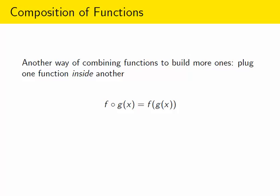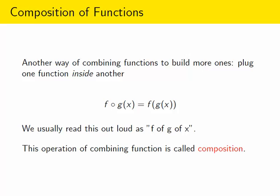The idea is to plug one function inside of another function. The notation for composition uses a small open circle to distinguish it from multiplication. Typically we write it as f of g of x, with g of x inside the function f of x. We usually read this out loud as 'f of g of x,' and this operation of combining functions is called composition.